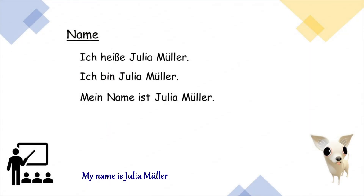So the next part is Vorstellen — that basically means introduction in English. If you want to introduce yourself to someone, you can say Ich heiße and then your name. For example, Ich heiße Yulia Mula, oder Ich bin Yulia Mula, or you can say Mein Name ist Yulia Mula. In a formal way, Germans include the family name. But if you want to introduce yourself in a less formal way, just drop your family name and say Ich heiße Yulia, oder Ich bin Yulia, oder Mein Name ist Yulia.